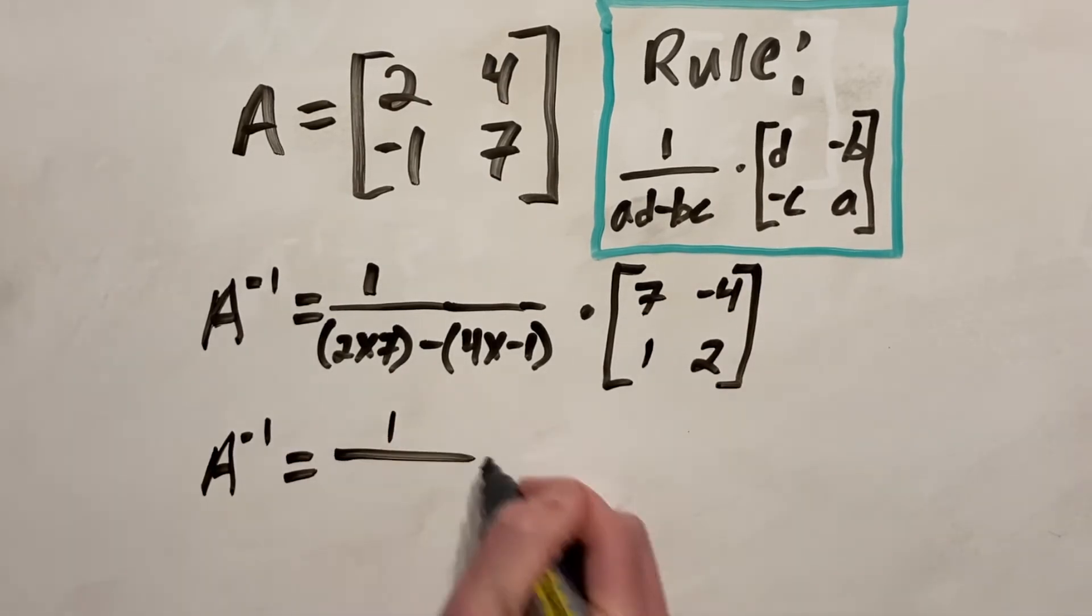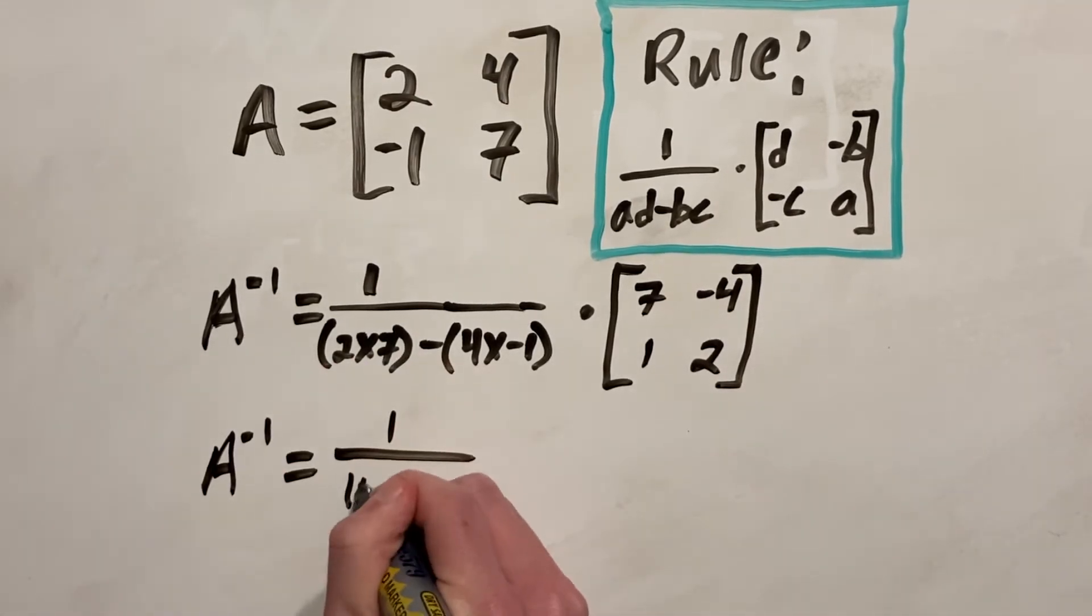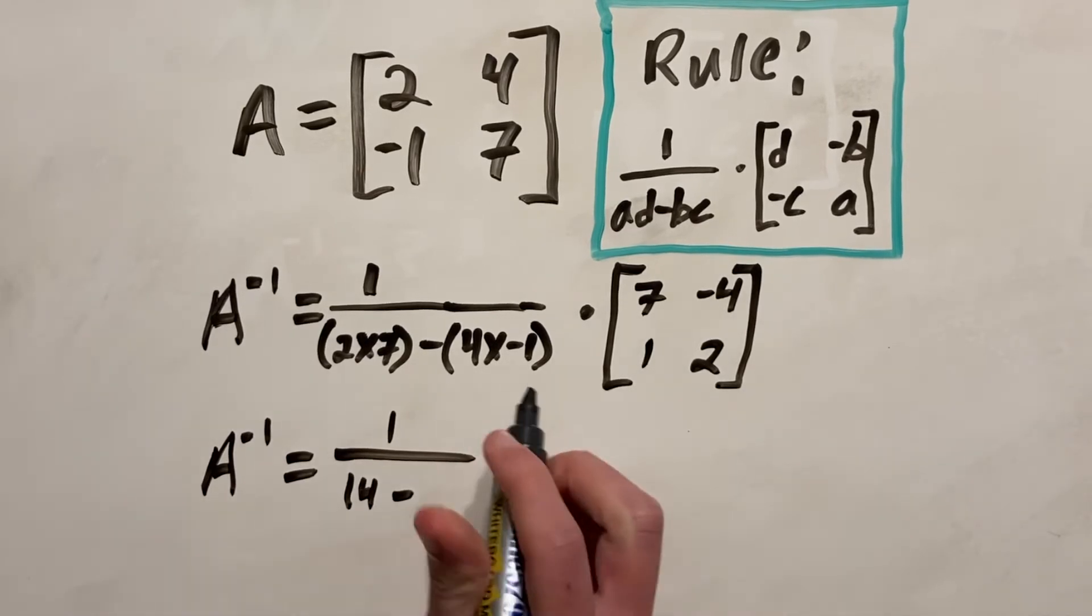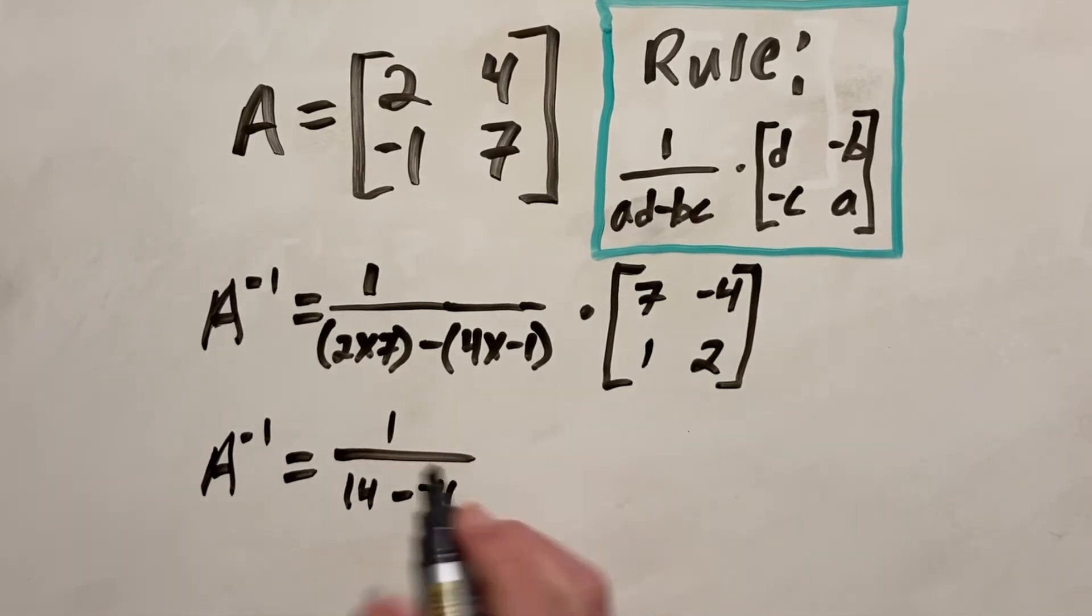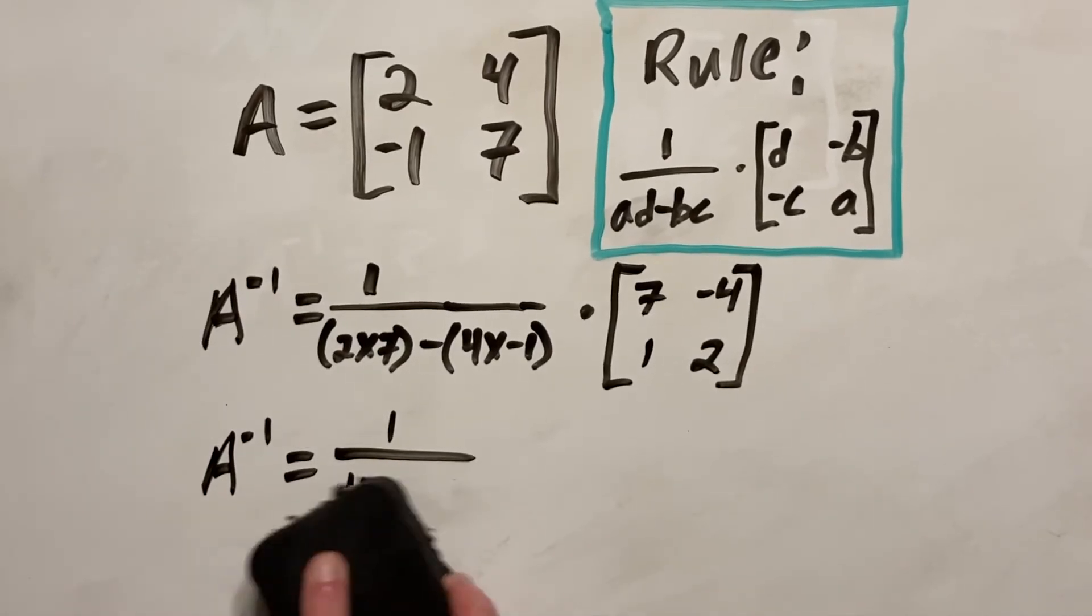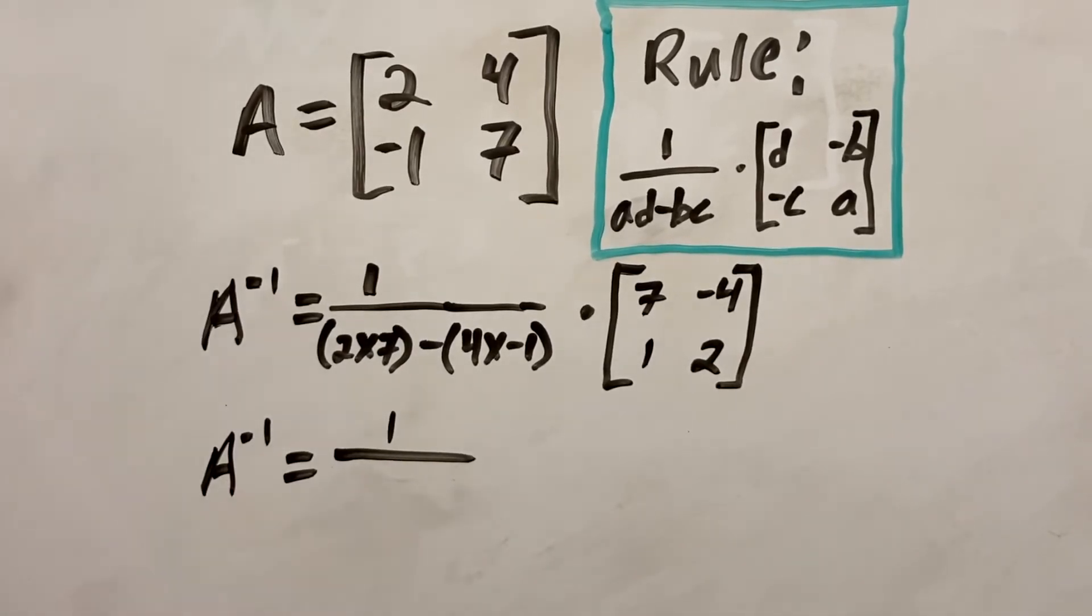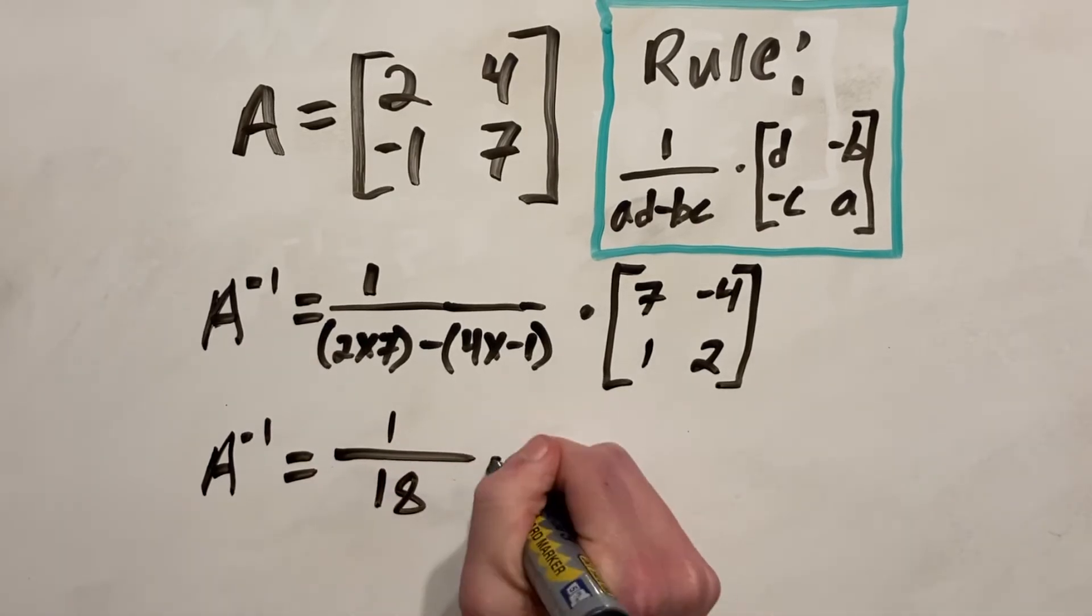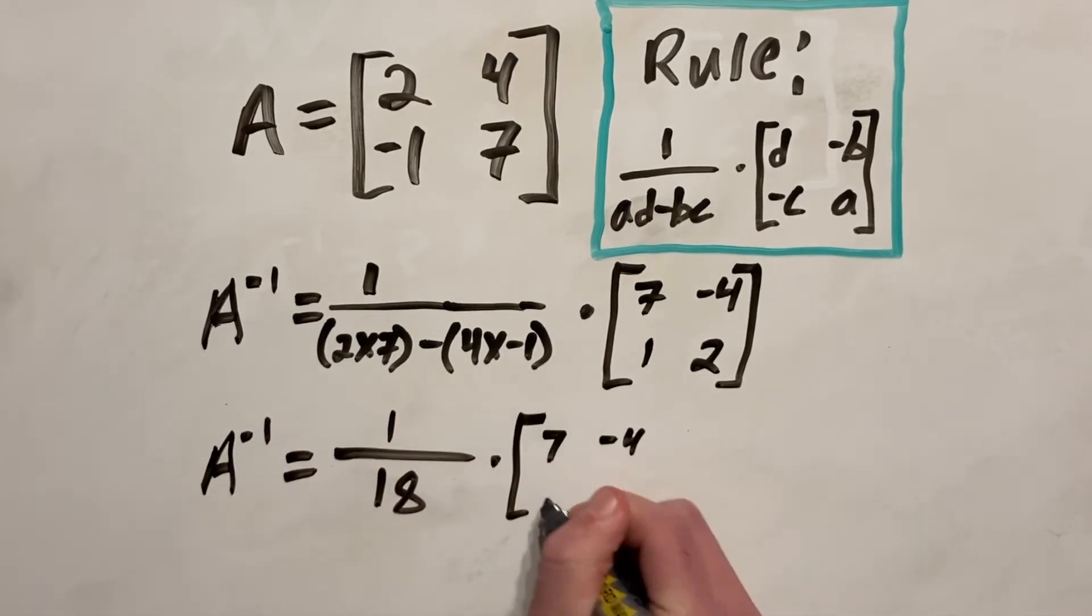Now we're going to continue working to simplify this. So 2 times 7 is 14, and 4 times negative 1 is negative 4. So 14 minus negative 4, remember 2 negatives makes a positive, so it becomes 14 plus 4, which is 18. And we're going to multiply that by that same matrix. So nothing there has changed.